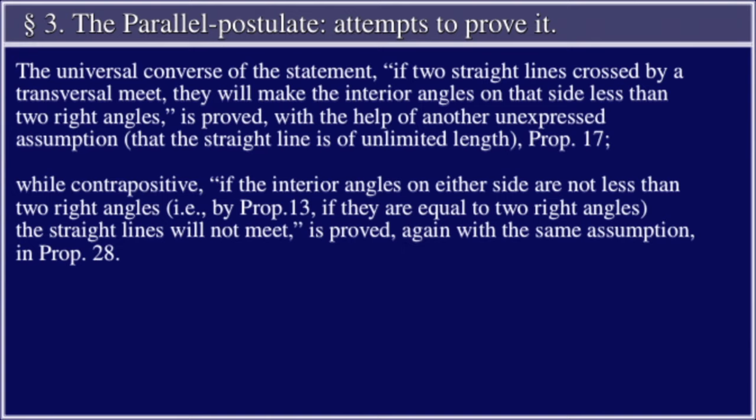straight line is of unlimited length, in Proposition 17. While the contrapositive — if the interior angles on either side are not less than two right angles, i.e., by Proposition 13, if they are equal to two right angles, the straight lines will not meet — is proved again with the same assumption in Proposition 28.